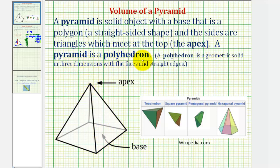A pyramid is also a polyhedron. A polyhedron is a geometric solid in three dimensions with flat faces and straight edges. So notice by this definition, all pyramids are polyhedrons, but all polyhedrons are not pyramids.